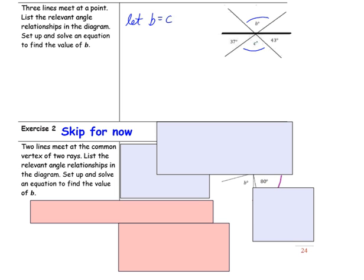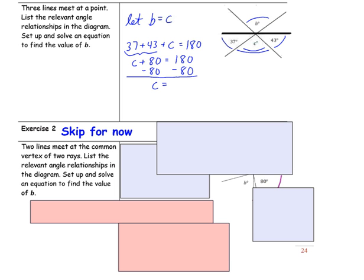Next, I'm going to write an equation: 37 plus c plus 43 equals 180 degrees. Combining like terms gives c plus 80 equals 180 degrees. Subtract 80 from both sides of the equation to solve for c: c is equal to 100 degrees. And since b is equal to c, then b is also 100 degrees.